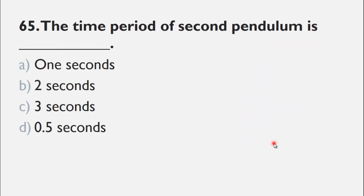MCQ number 65 is: The time period of second pendulum is ___. The choices are A) 1 second, B) 2 seconds, C) 3 seconds, and D) 0.5 seconds. So the right choice for this question is B, 2 seconds, because the time period of a second pendulum is 2 seconds. It means that a second pendulum completes one vibration or one cycle in just 2 seconds.